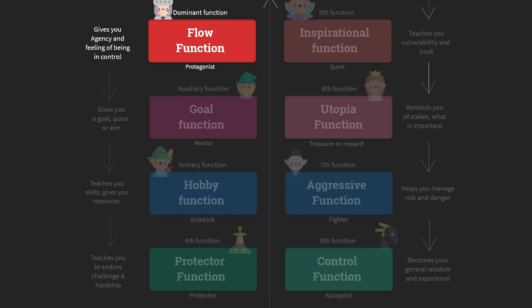The dominant function is the function that you use four-dimensionally. That means it gives you energy, stability, motivation, and confidence. The more you use this cognitive function, the more confident you become — the more clear, strong, and conscious this function is in your stack, the better you feel. It's your flow function, and it gives you a sense of agency. When you have this function, you feel in control, proactive, an active agent in charge of your own life, making your own decisions.